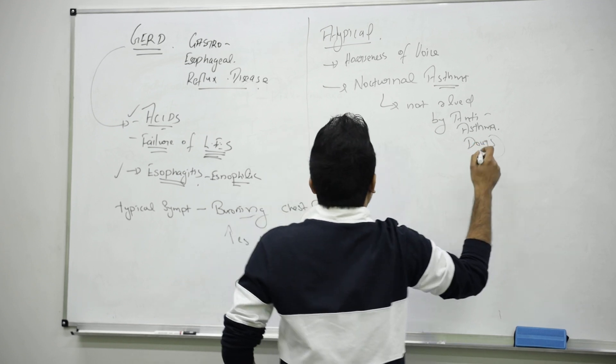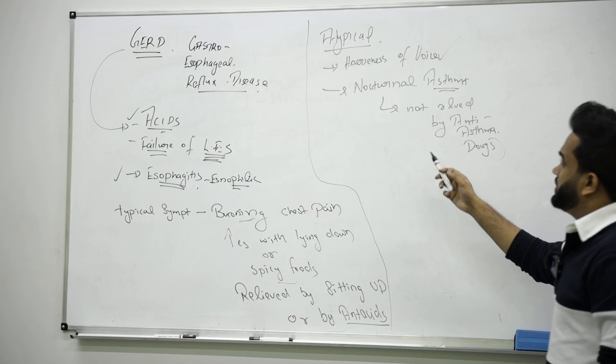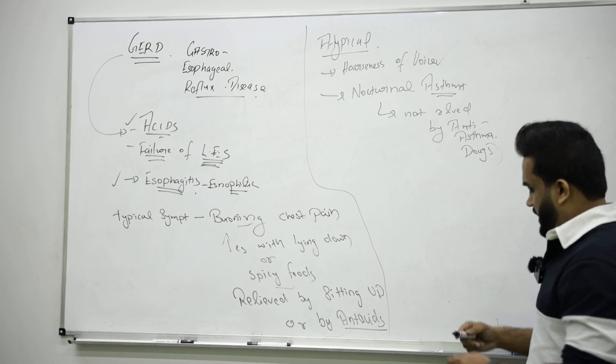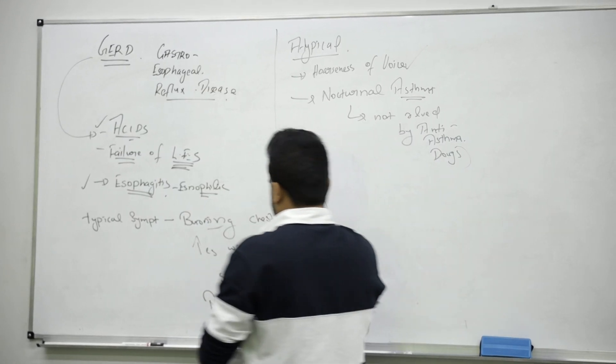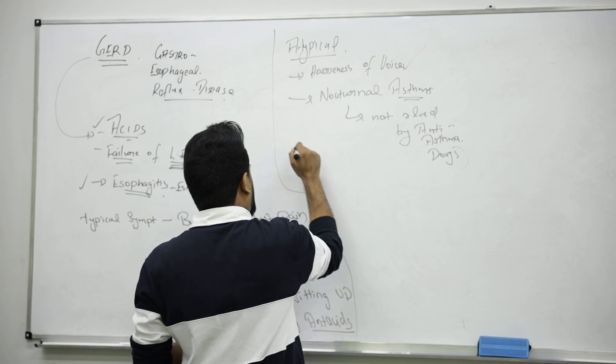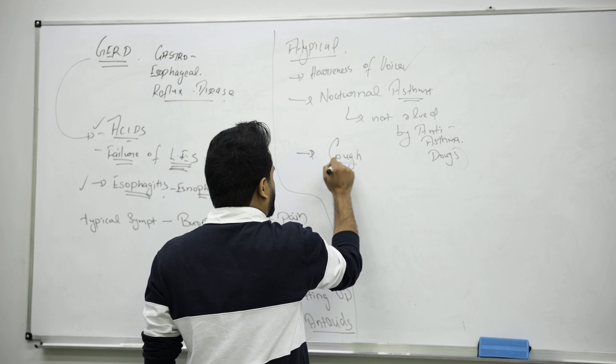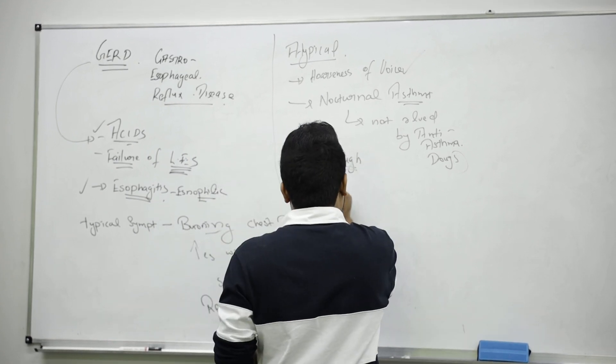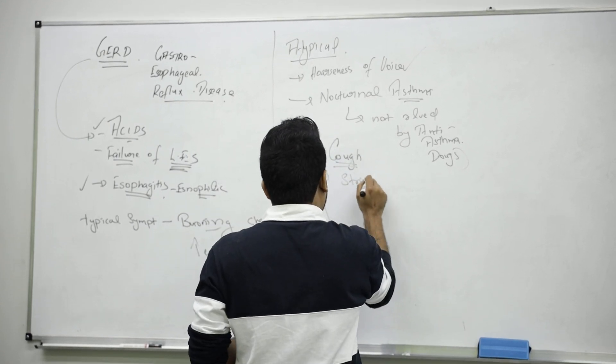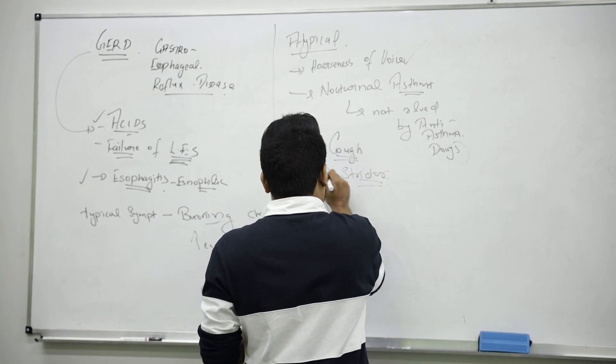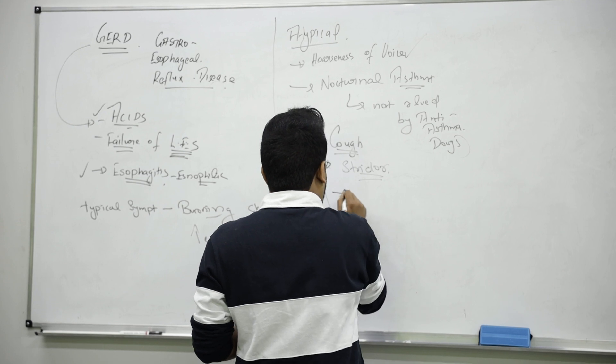Atypical symptoms include hoarseness of voice, nocturnal asthma, and people will be coughing because of this reflux. Cough, as well as sometimes stridor also. They will have a bitter taste in the mouth.